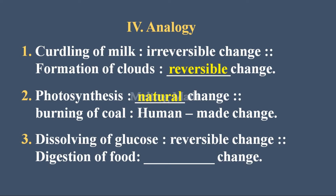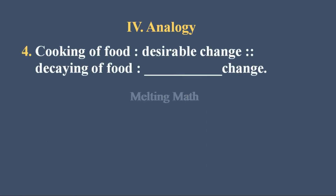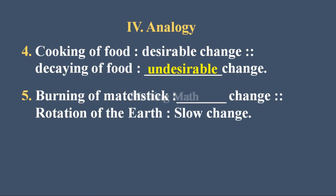Question three — dissolving of glucose is to reversible change as digestion of food is to blank change. Digestion of food is an irreversible change. Question four — cooking of food is to desirable change as decaying of food is to blank change. Decaying of food is an undesirable change because it's not useful for us. Question five — burning of magic is to blank change as rotation of earth is to slow change. Burning of magic is a fast change.